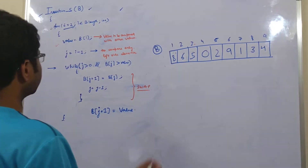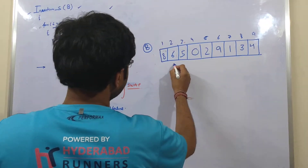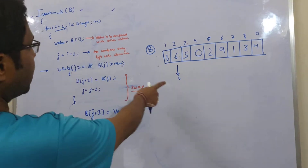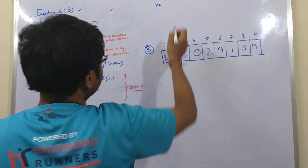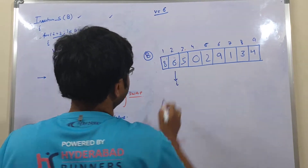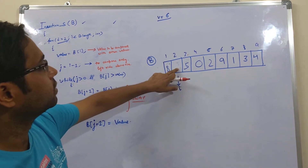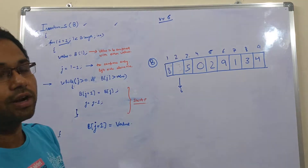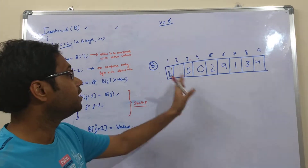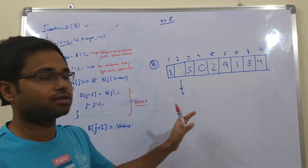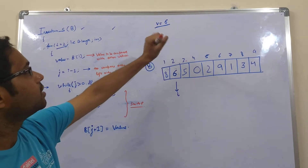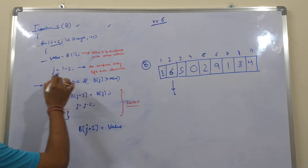Now let's see how this works. Our first step is: value equals b[i]. So i equals 2, and b[2] is 6. We store our value 6 here. It is not like we are removing this number — the space is not empty. I have saved this number because in later stages we might need to swap a number into this place, so we save it to prevent the value from being overridden.